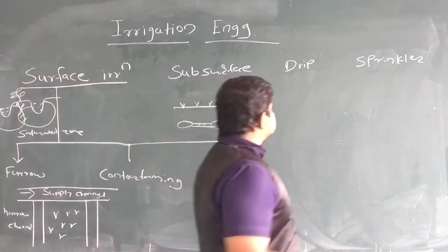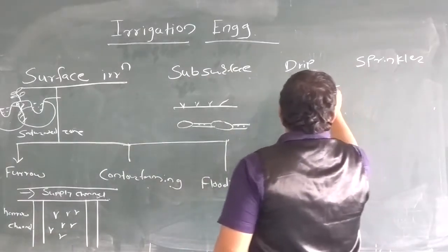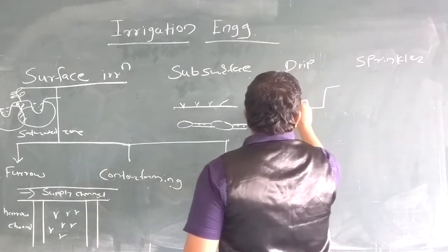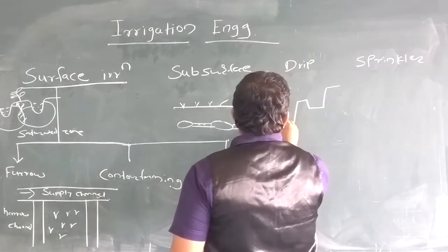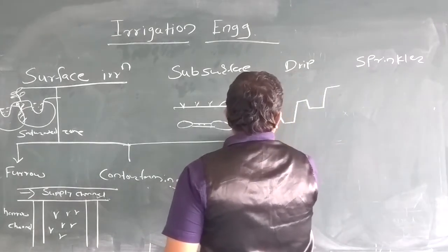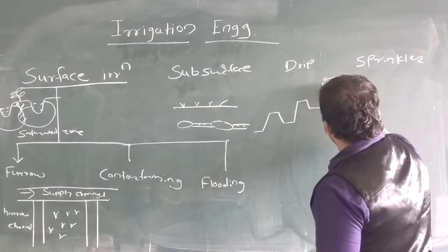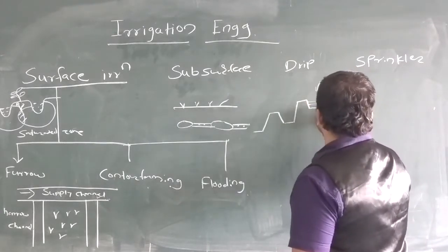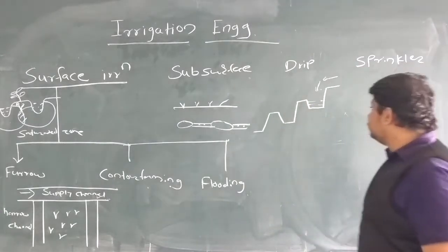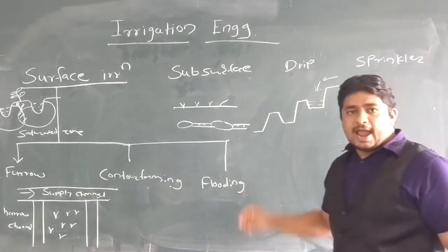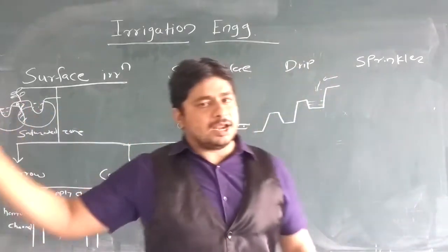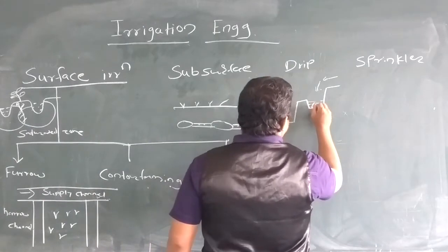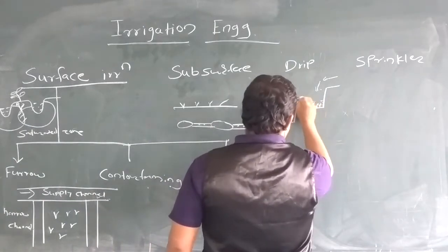Next is contour farming. This method is ideally suitable for hilly areas. Water flows along the slope and is stored in horizontal strips known as terraces. The terraces are enclosed by bunds, and crops are sown in these terraced areas.